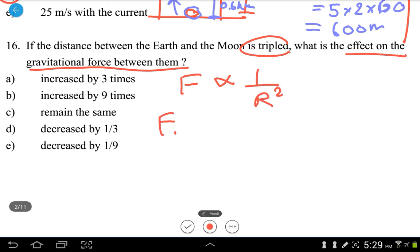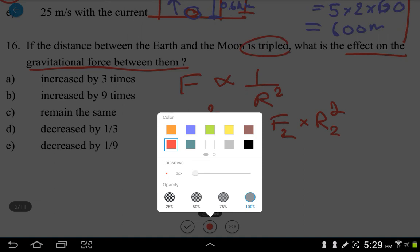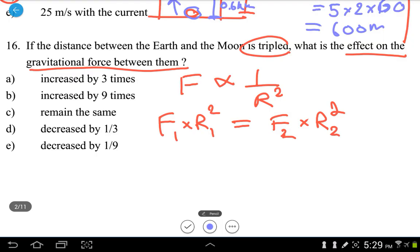you can go with this: F1 times r1 squared, that should give you the same value as F2 times r2 squared. Now I will just put an assumption that the force between the Earth and the Moon is F, and the radius, let me just take a value of 1. 1 squared equals I am trying to find this new value F2.